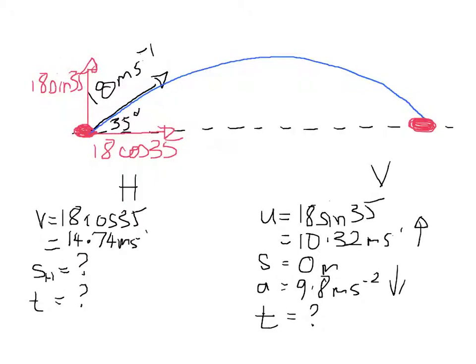Now, when we look at all the data for the horizontal and the vertical parts of the motion, all we know for the horizontal side of things is that its initial velocity and therefore its constant horizontal velocity is 14.74. We don't know the range and we don't know the time.